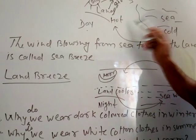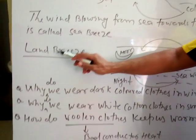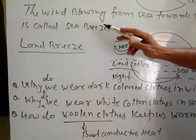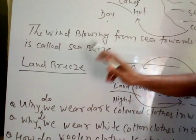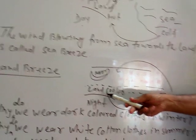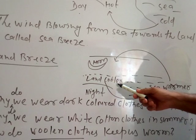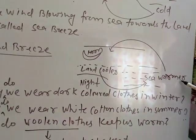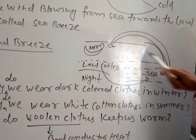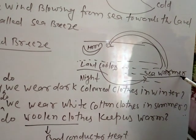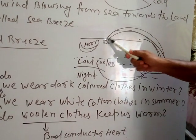Sea breeze takes place during daytime in coastal areas. The second phenomenon is land breeze. In land breeze, the breeze from the land moves towards the sea, and this takes place during nighttime. At night, when the sun sets, the land becomes cooler while the sea remains warmer. The warm air over the sea rises up and moves towards the land.